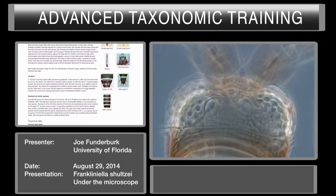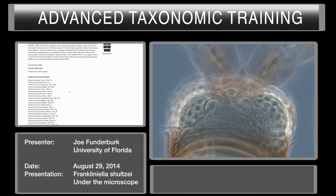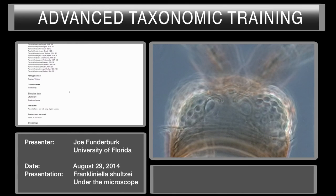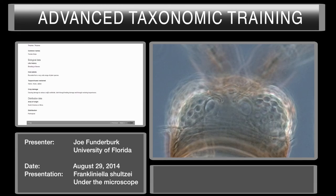There's information here on related and similar species, taxonomic data — Schultzi is the current name, with original name and synonyms. Family placement: it's a Thripidae. Common names: tomato thrips. It breeds in flowers and has been recorded from a very wide range of plant species. It's a Tospovirus vector: tomato spotted wilt virus, tomato chlorotic spot virus, and groundnut ring spot virus. You'll also see distribution data: area of origin South America or Africa, distribution pantropical.